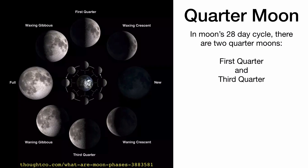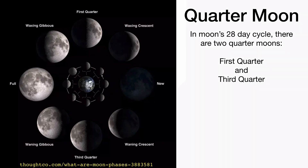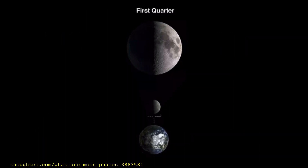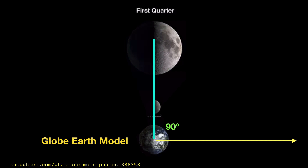Let's take the quarter moon first. The quarter moon happens twice in the moon's 28-day cycle — we call it first quarter and third quarter, with the full moon in between. In the globe Earth model, we have the sun off to the right, and the moon is at 90 degrees to the sun. The upper image is kind of what we would see from Earth.